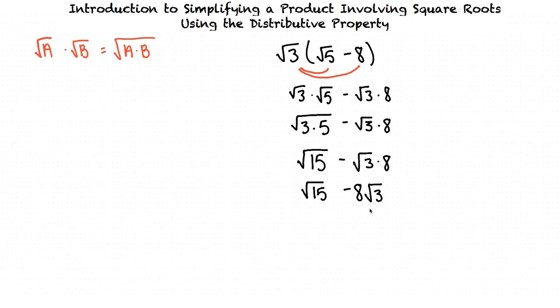Similarly, the square root of 3 is also in simplified radical form because 3 has no perfect square factors other than 1.